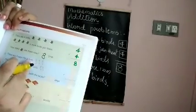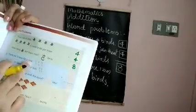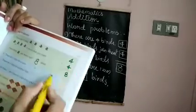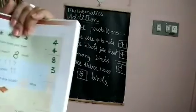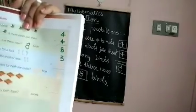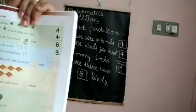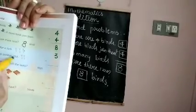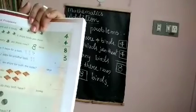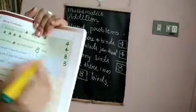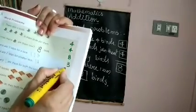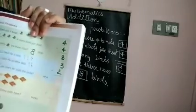Second problem: there are three keys for a lock — count one, two, three. Write three in the box. There are two keys for another lock — count one, two. Write two in the box below.